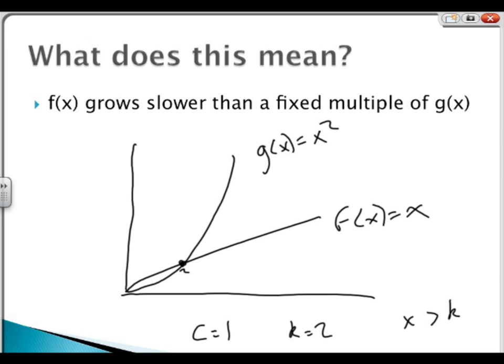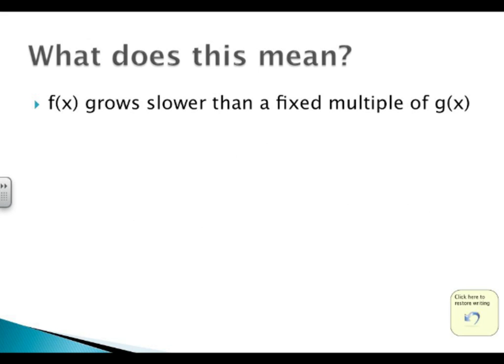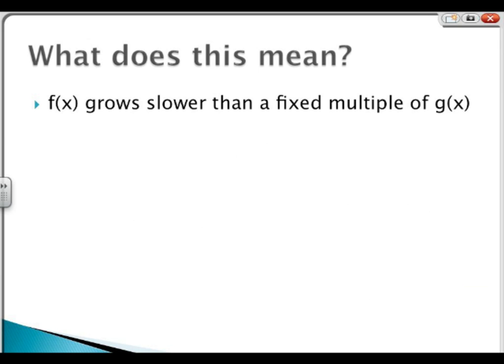So g of x is the upper bound for the function f of x. There's a whole different ordering for a bunch of different functions graphically.